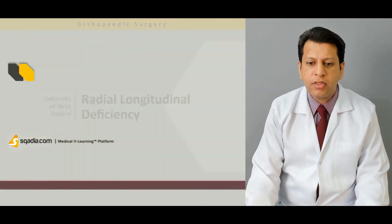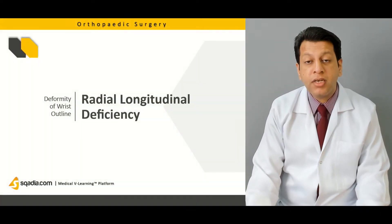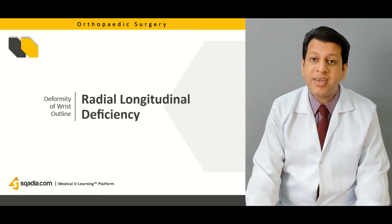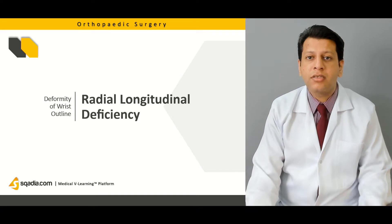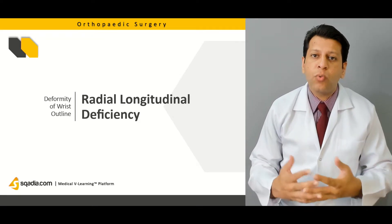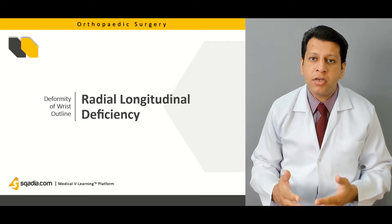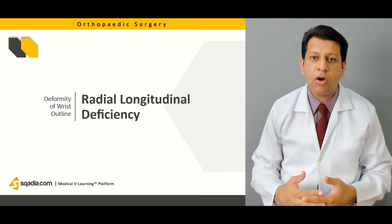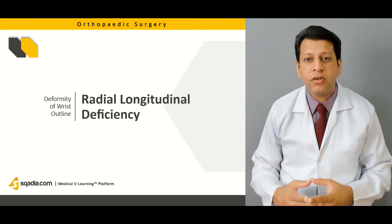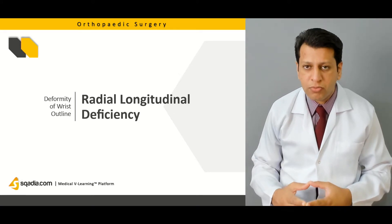We will be starting off with the longitudinal deficiencies of the radius, also called the radial club hand. We will be briefly discussing its signs and symptoms when the children present for radial deficiencies, what is the main classification, how to treat the radial club hand, and what are the different centralization procedures.